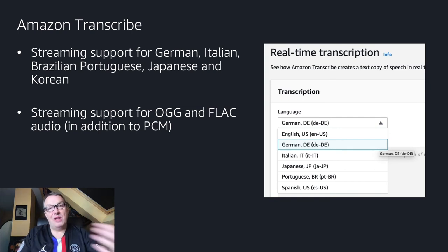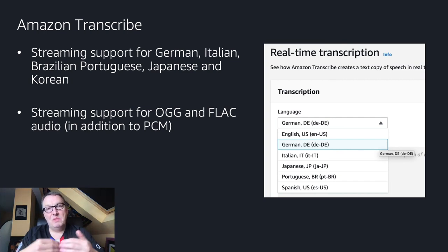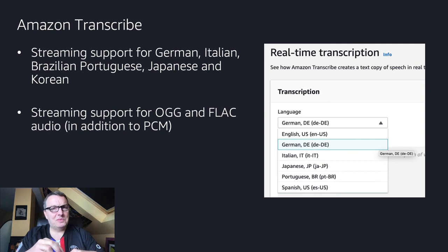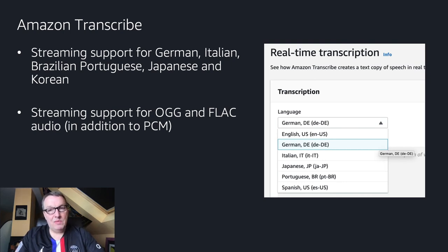Amazon Transcribe is the companion to Amazon Polly — Polly is text-to-speech and Transcribe is speech-to-text. You can use it in batch mode, transcribing sound files uploaded to Amazon S3, or in real-time transcription mode. We now have additional language support for streaming: German, Italian, Brazilian Portuguese, Japanese, and Korean. You can also now stream audio content in OGG or FLAC format. Originally only PCM was supported, so customers had to convert from those formats. Now you can use them natively. FLAC is a lossless, high-quality format and it's now fully supported.